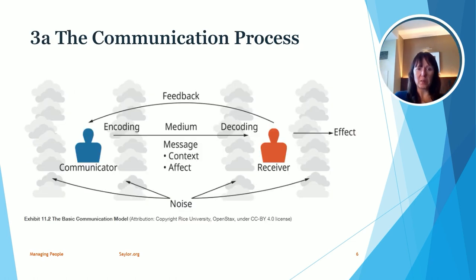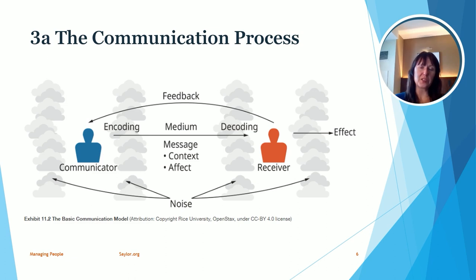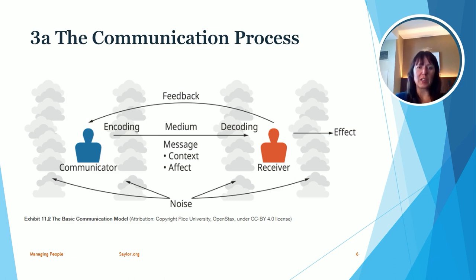When we take a look at communication, it's really important to understand the communication process, and this figure describes that very well. We have the communicator — the person sending a message — and we have the receiver. Within that process, encoding refers to what we put in a message to the other person, and decoding refers to how the person understands the message. The mediums include the context, the effect, and the method of communication, such as email or face-to-face.